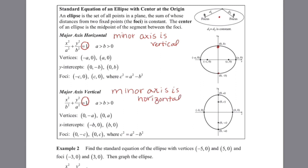If my major axis is horizontal, we will utilize the formula x squared over a squared plus y squared over b squared, where a is bigger than b and they both have to be greater than zero. Similarly, notice where a changes with the major axis vertical — the larger value is underneath the y value. And then it gives us how we can identify the vertices, the y-intercepts, and the foci.